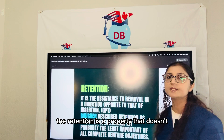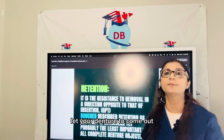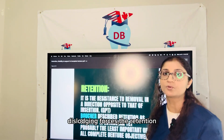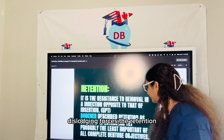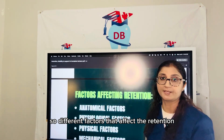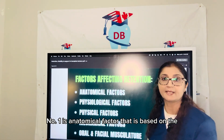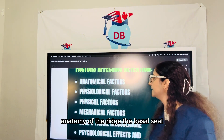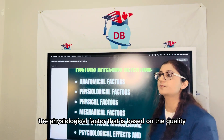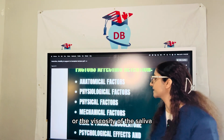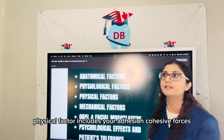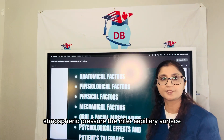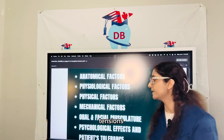Retention is a property that doesn't let your denture come out — it is a resistance against the vertical dislodging forces. The different factors that affect retention: number one is the anatomical factor, based on the anatomy of the ridge and the basal seat. The physiological factor is based on the quality or viscosity of the saliva. Physical factors include adhesion, cohesive forces, atmospheric pressure, and intercapillary surface facial tensions.